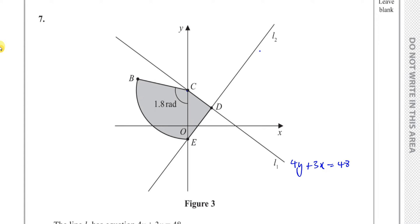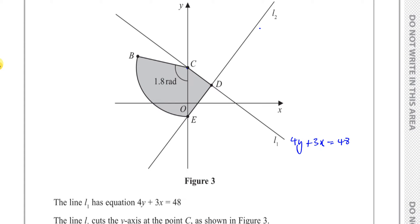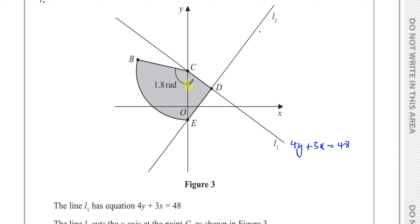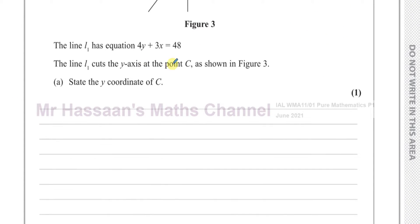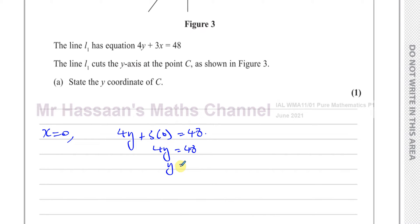We don't need anything about line two in this first part. It crosses the y-axis at point C. Everywhere on the y-axis, x is equal to zero — so x equals zero is the equation of the y-axis. All you need to do is substitute x equals zero into the equation of the line. So when x equals zero, you have 4y plus 3 times zero equals 48, leaving 4y equals 48, so y equals 12.